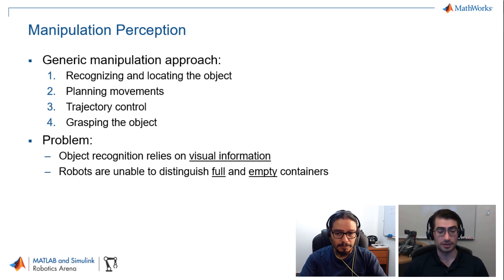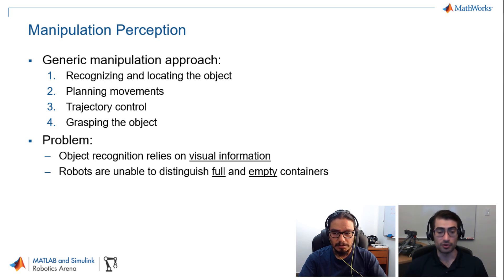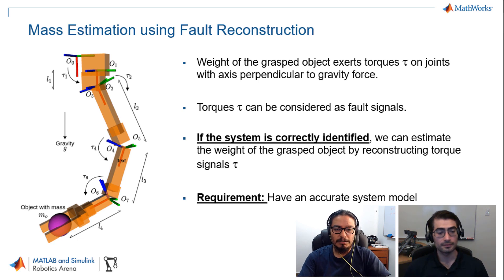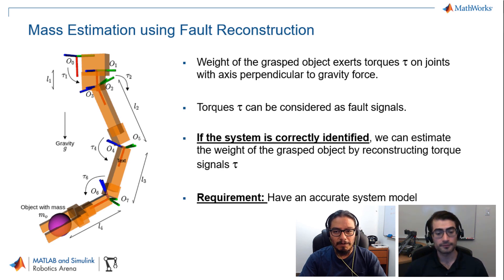What's interesting about this research is that the proposed approach does not require any additional sensors beyond what's already in the robot used for control. What we propose to distinguish an empty and a full container is to simply estimate the mass of the grasped object, and we are proposing to use a fault reconstruction approach.